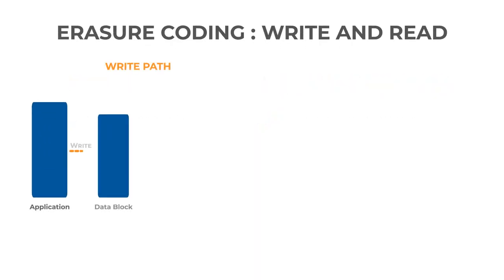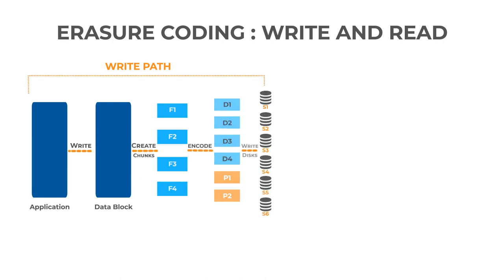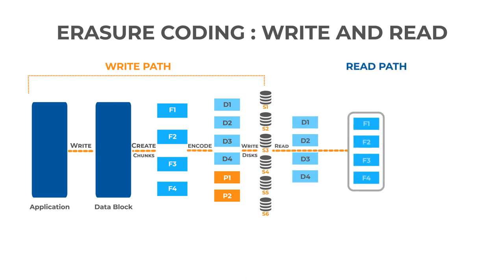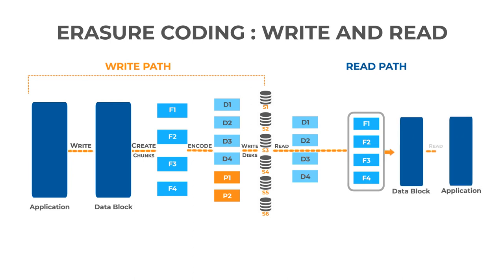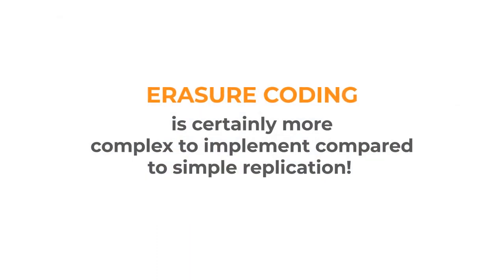Let's look at the write and read paths separately. During data write to storage, data needs to be encoded to generate the parity — these computations are a compute-intensive process. Every time data changes, the parity needs to be recalculated. During data read from storage, if there are no issues with data corruption or storage failures, data read can be fairly straightforward. However, when data integrity is lost, reconstruction needs to happen. Reconstruction is both a compute and network-intensive process. Erasure coding is certainly more complex to implement compared to simple replication.